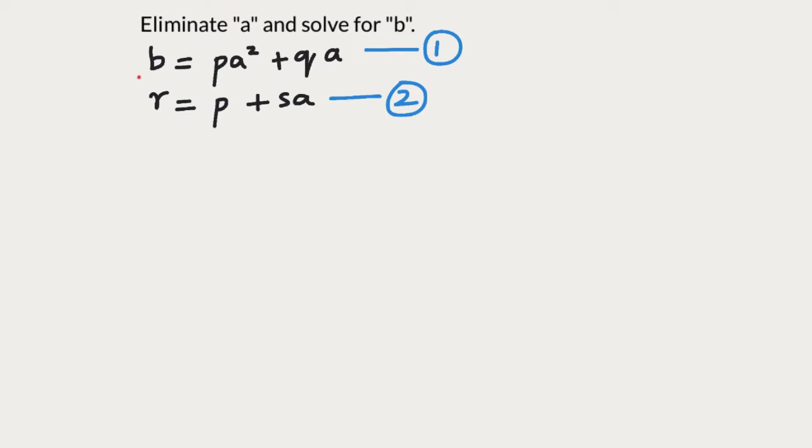What we can do is begin from the second equation and isolate A from here. P is being added on the right hand side. Let's take it to the other side and subtract it. R minus P equals S A. Now S is being multiplied by A. Let's take it to the other side, so it shows up in the denominator on the left hand side. R minus P over S equals A.